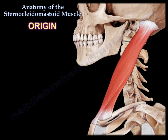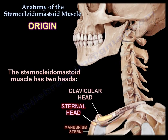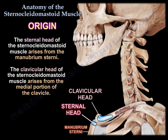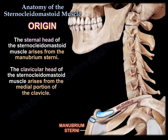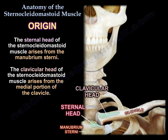Origin. The sternocleidomastoid muscle has two heads: a sternal head and a clavicular head. The sternal head arises from the sternal manubrium. The clavicular head arises from the medial portion of the clavicle.